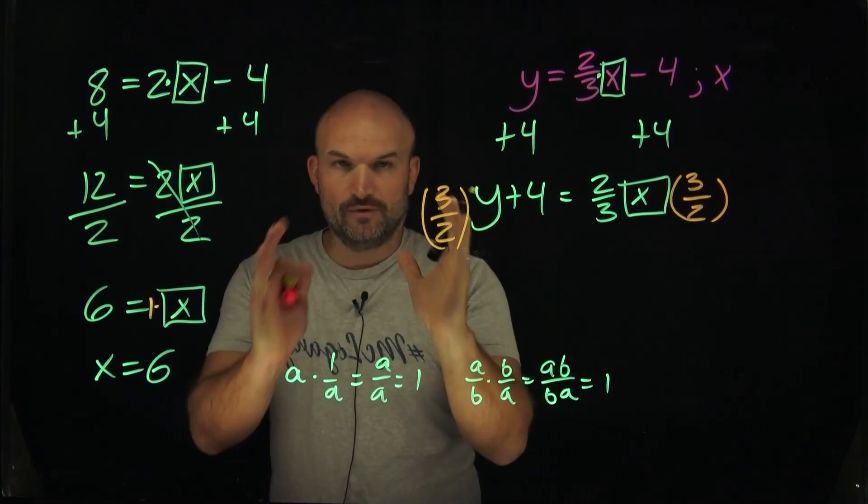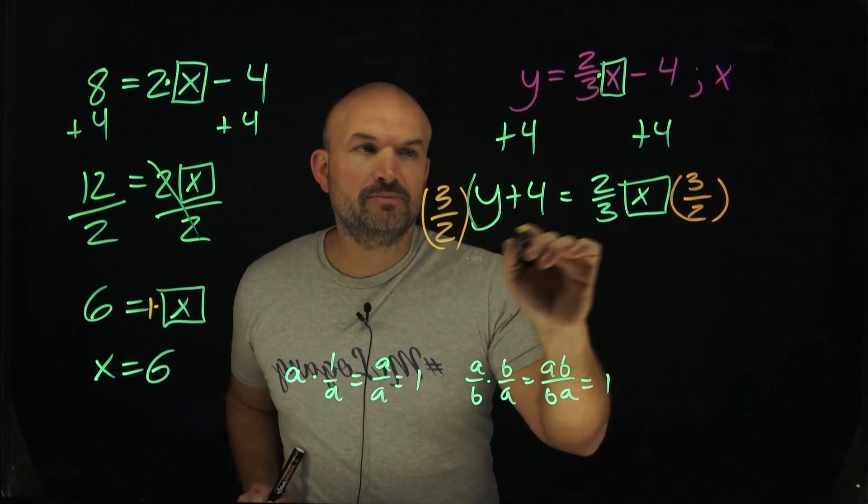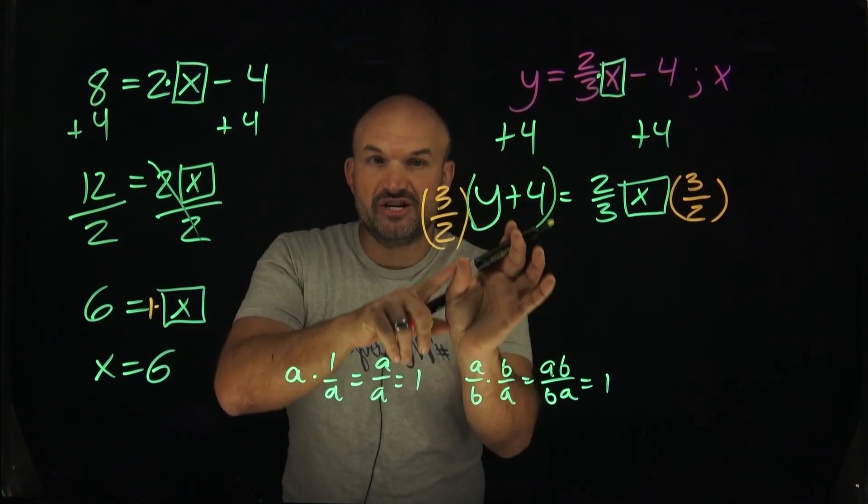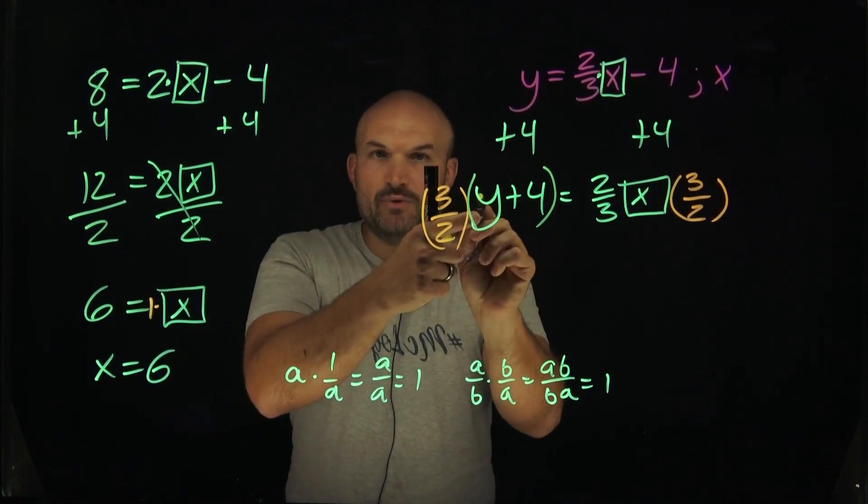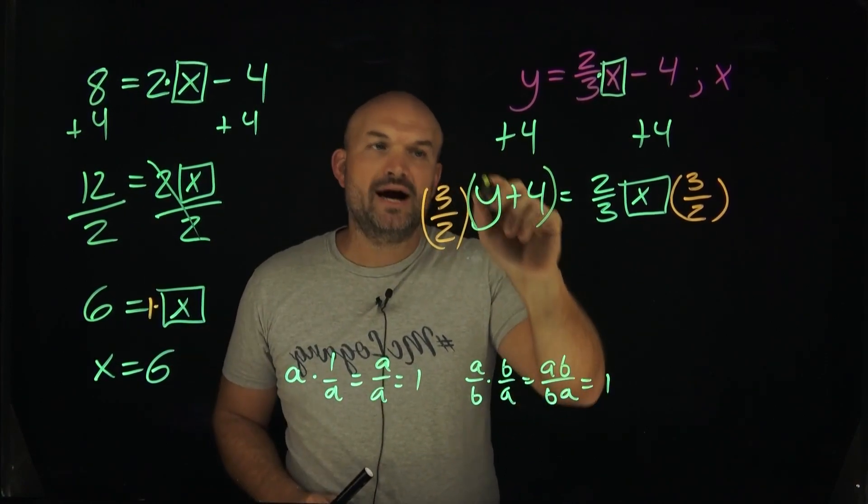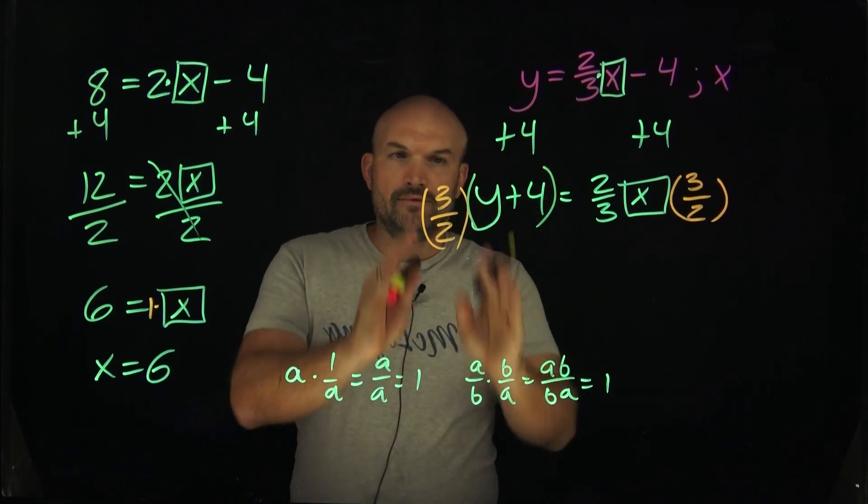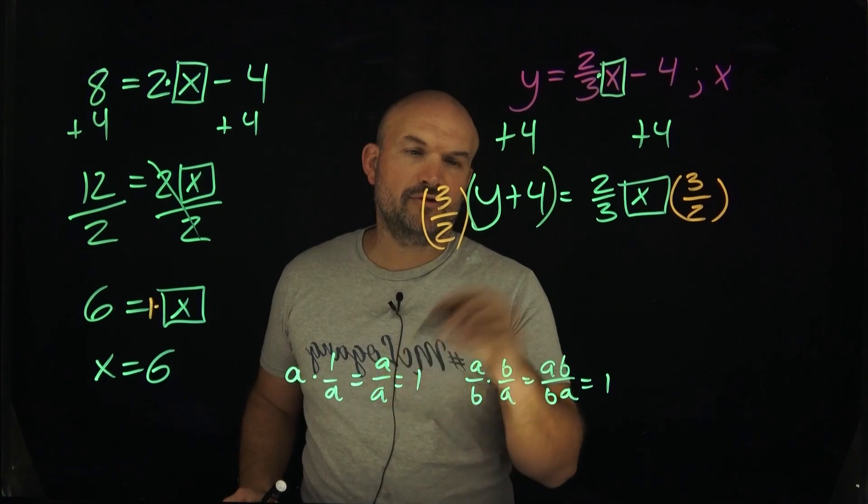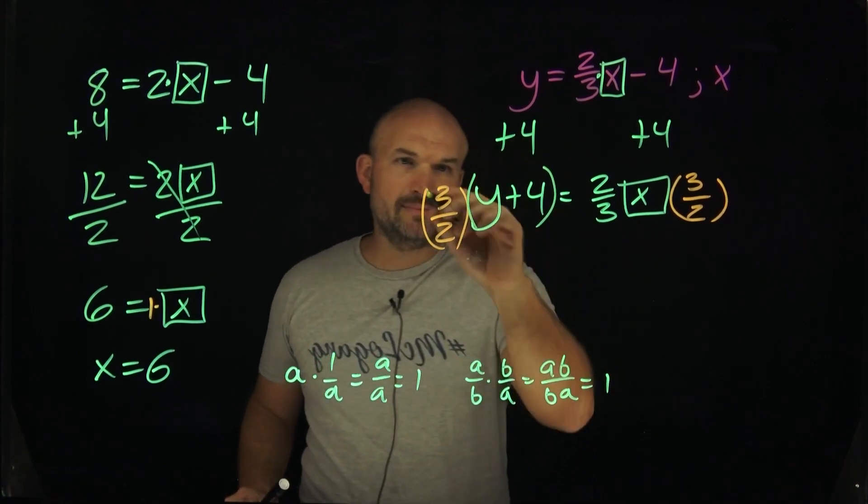Therefore, now I have 3/2 times (y + 4). Now again, here's a big mistake students will make: they see how I put parentheses around the 3/2, because I want to show that I'm multiplying them. Make sure you put parentheses around this expression, because over here you just had one number. Over here we have an expression. We're not just multiplying the 3/2 times y, we're multiplying the 3/2 times (y + 4).